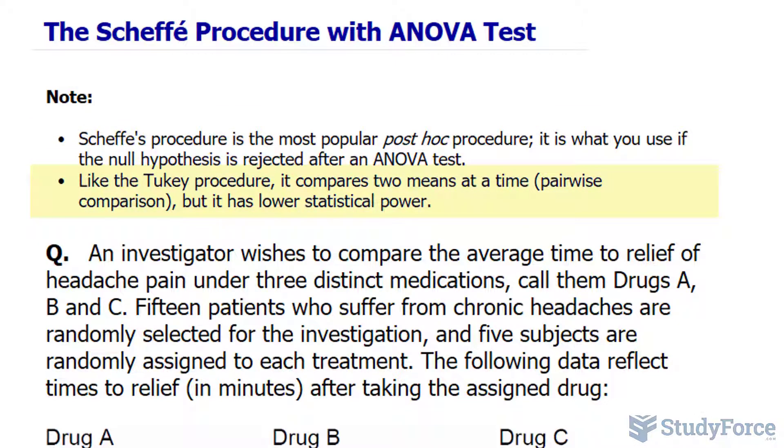Like the Tukey procedure, it compares two means at a time. It's a pairwise comparison, but it has a lower statistical power.